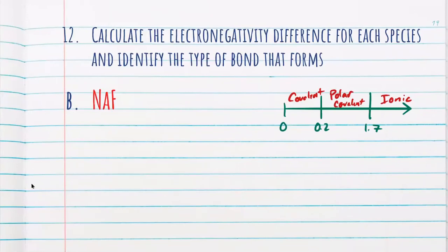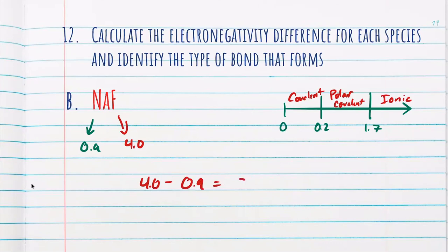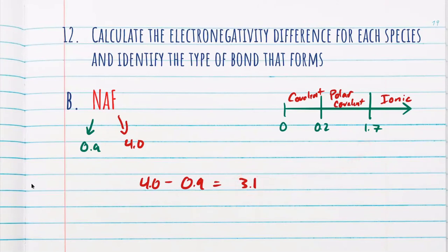Next, we have sodium fluoride (NaF). Sodium has an electronegativity of 0.9, while fluorine has an electronegativity of 4.0. Finding the difference — 4.0 minus 0.9 — we get a difference of 3.1. Looking at our chart, it is clearly ionic, so I'm going to put an ionic bond.